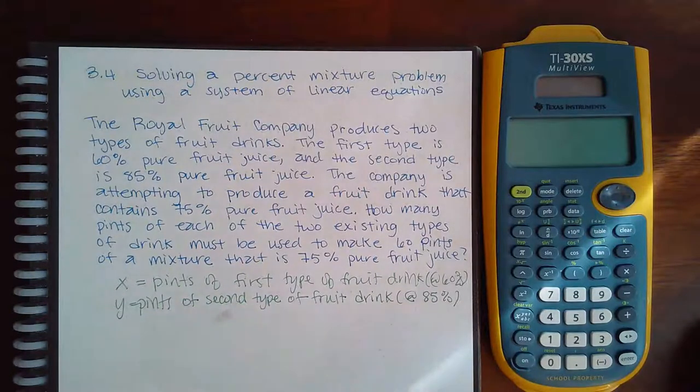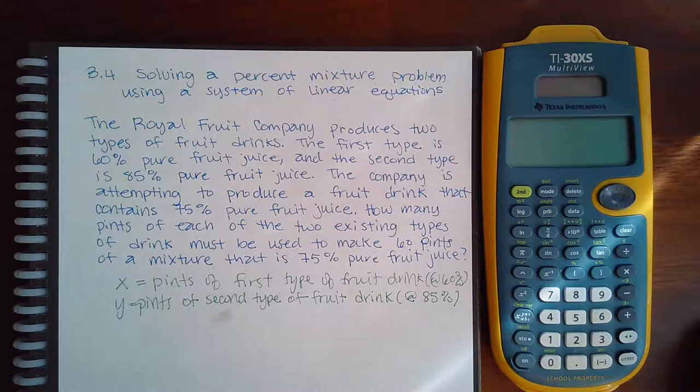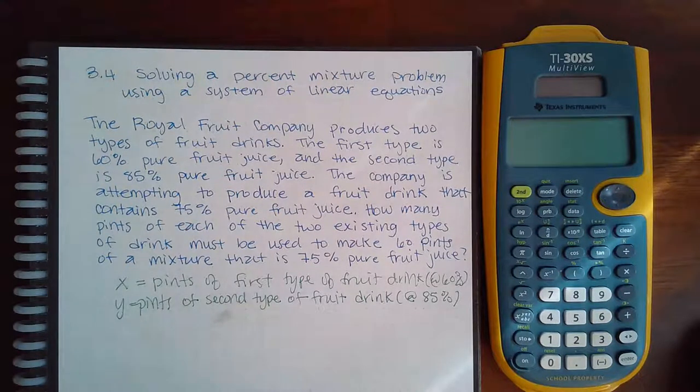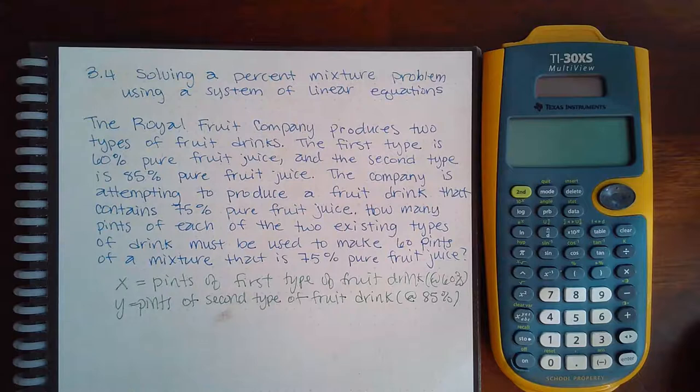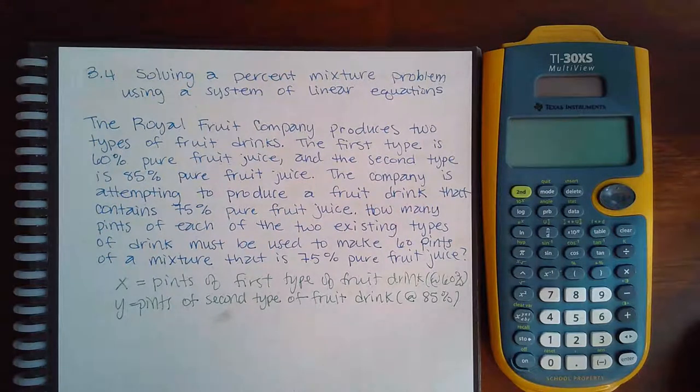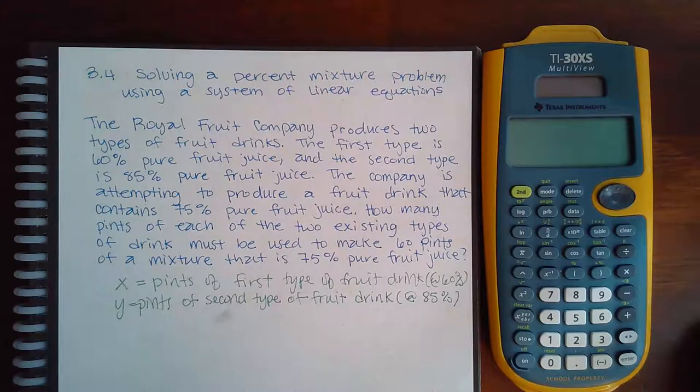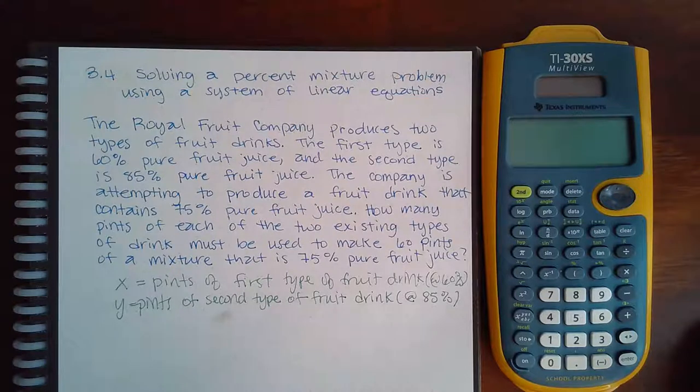This is 3.4 solving a percent mixture problem using a system of linear equations. The Royal Fruit Company produces two types of fruit drinks. The first type is 60% fruit juice and the second type is 85% pure fruit juice. The company is attempting to produce a fruit drink that contains 75% pure fruit juice.